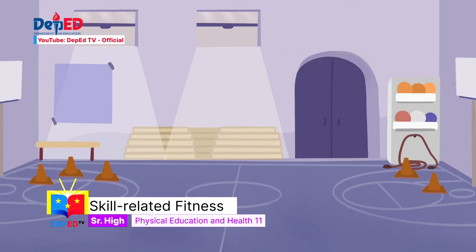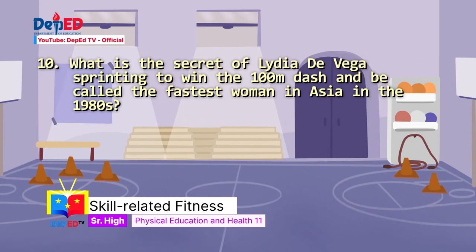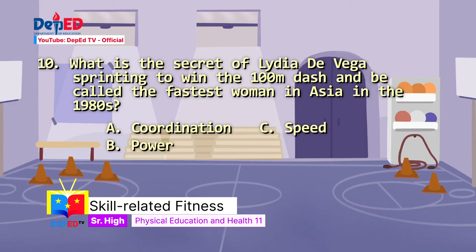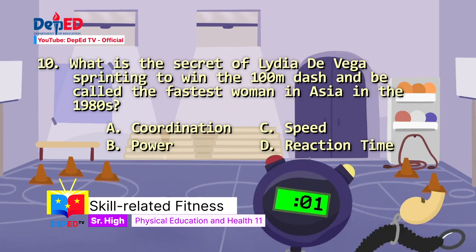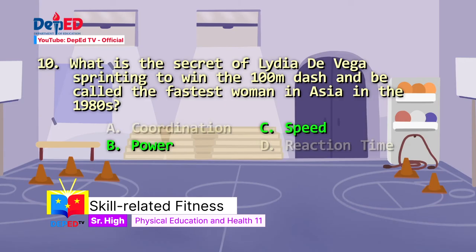And lastly, number ten: What is the secret of Lydia de Vega's sprinting to win the 100-meter dash and be called the fastest woman in Asia in the 1980s? A) coordination, B) power, C) speed, or D) reaction time. The correct answer is both letter B and letter C — power and speed.